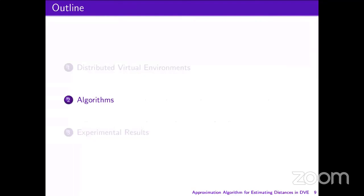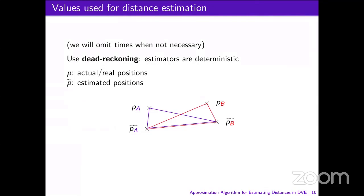Now I will present our algorithm. This algorithm uses a technique called dead reckoning, which allows us to have estimators that are deterministic. This means that a player who sends information about his state to another player will be able to know exactly where the other player estimates him to be. If we denote by P the actual positions and by P-tilde the estimated positions, in this example we represent the knowledge of player A in blue and the knowledge of player B in red.